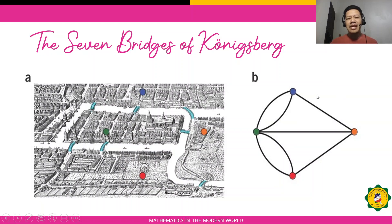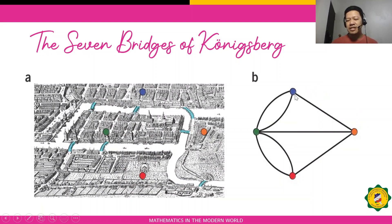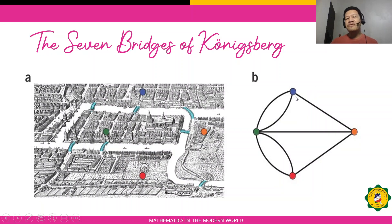For an Euler path, there should be exactly two odd vertices. Now let us determine the degree of each vertex in this graph. To find the degree, we count the number of edges connected to each vertex. For the blue vertex, there are three edges connected to it, so its degree is three — that is an odd degree.